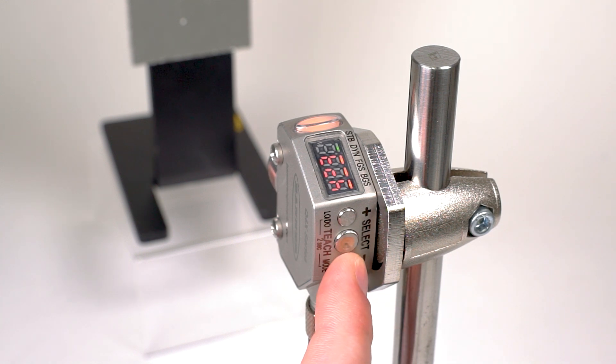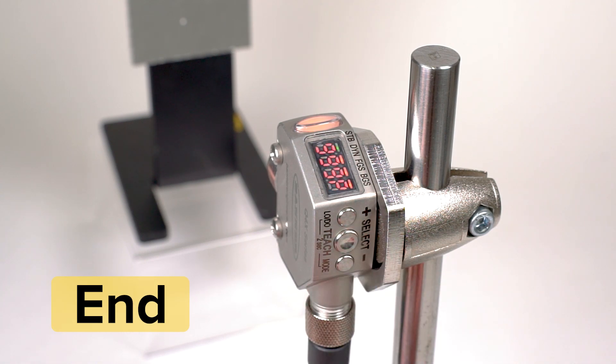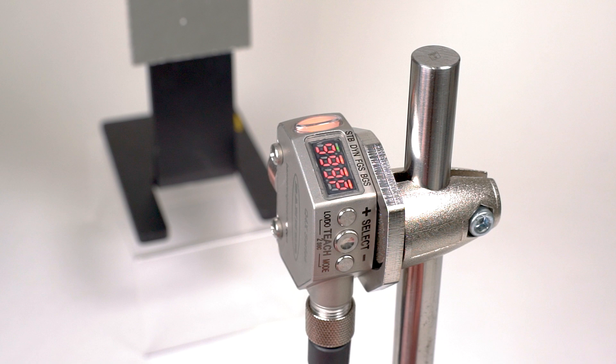Use the plus and minus buttons again to navigate through the menu until you see end and press the select button one more time, which will return you to the sensor run mode.